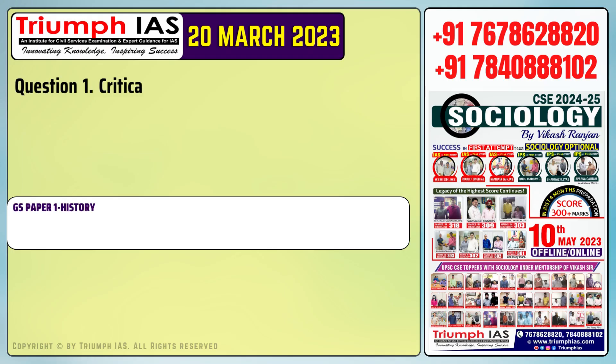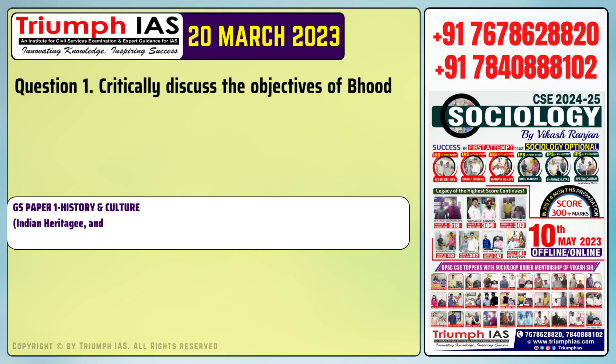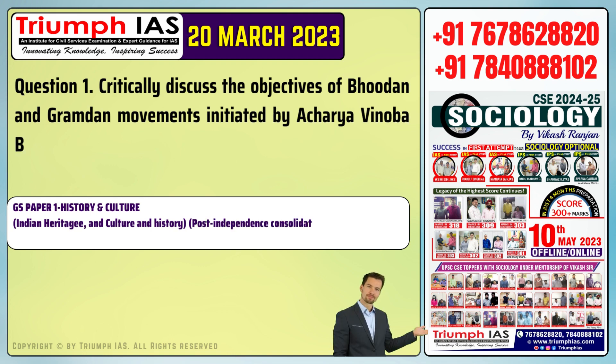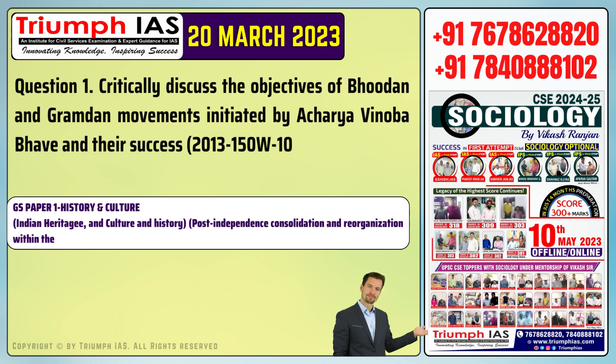Question number 1: Critically discuss the objectives of Bhudan and Gramdhan movements initiated by Acharya Vinoba Bhave and their success.